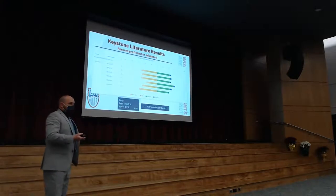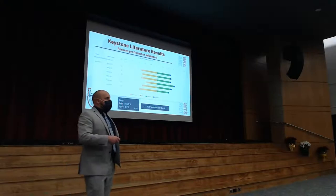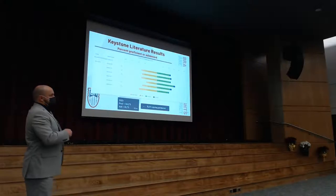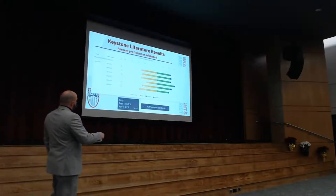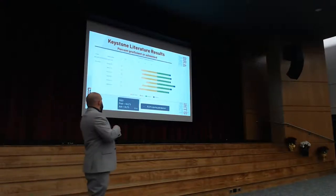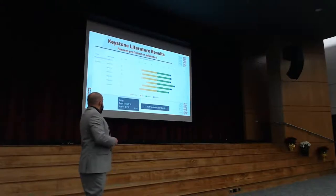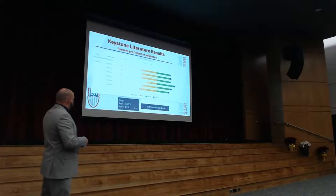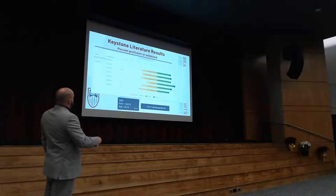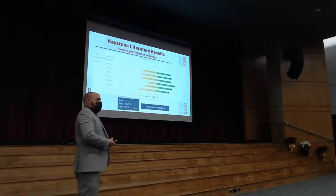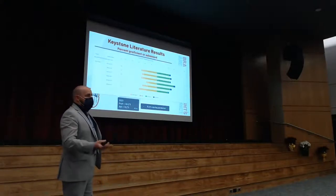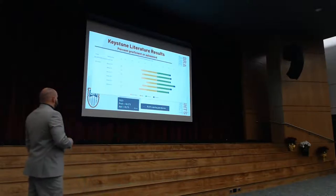Shifting to high school data: the Keystone exam data still goes only to 2019 as the 2021 county-wide data hasn't been released. Starting with literature — the ELA side — during the pandemic we actually went up 15.5 percentage points, finishing at 57.4% proficient or advanced. That's one of our highest-performing years and is very encouraging. The work being done even during the pandemic is starting to yield positive results.